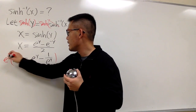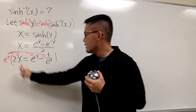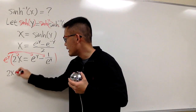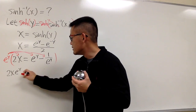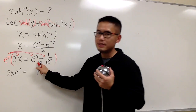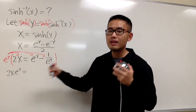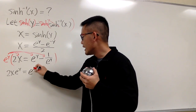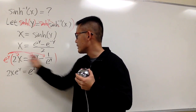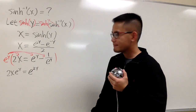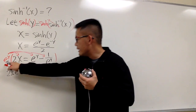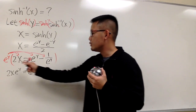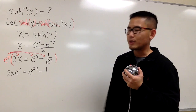Be sure you multiply everything by e to the y. For the left side we get 2x·eʸ. On the right, e to the y times e to the y becomes e to the 2y — be sure you add the exponents, y plus y gives 2y. And e to the y times 1 over e to the y gives minus 1, because e to the y cancels out.